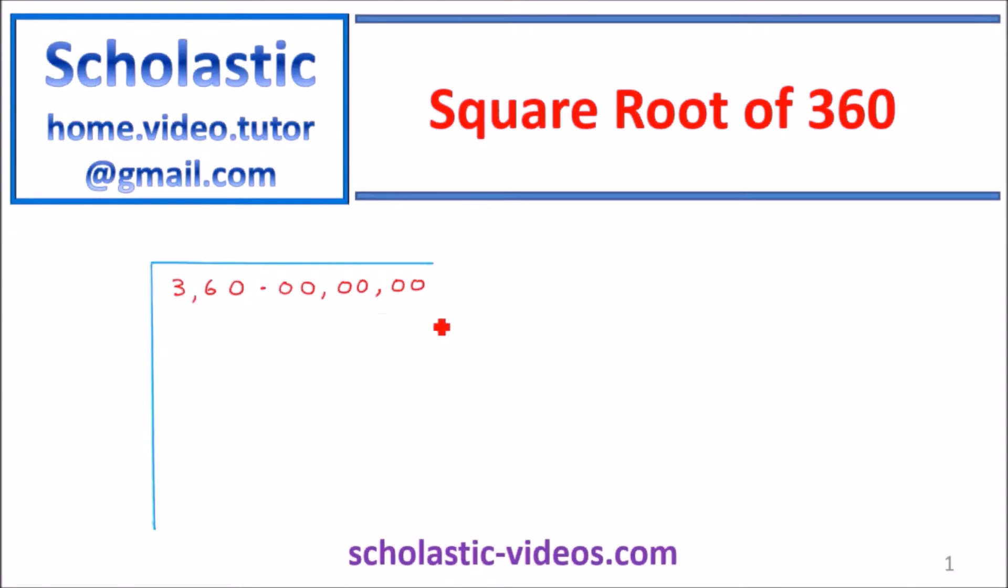So now first one is to take number, look at number 3, which is the first number there. We need to find out the perfect square less than 3. So only option is 1 times 1 is 1. If you take 2, 2 times 2 is 4. Therefore it is greater than 3. So take 1 times 1 is equal to 1. So 3 take away 1 is 2.